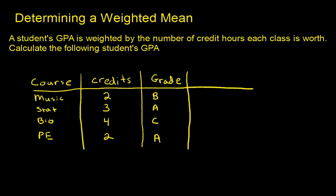Let's calculate this student who took music, statistics, biology, and PE. This is one semester GPA.